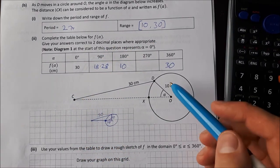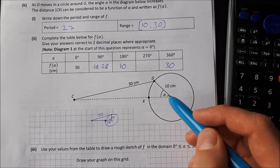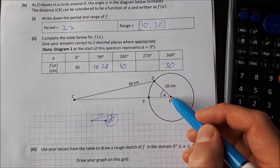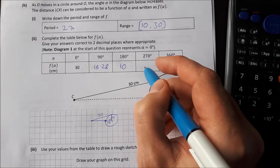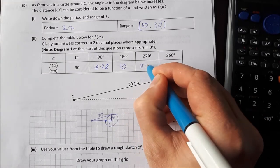For 270 it's actually going to be the same thing as well because this will just be down here, so it'll just be that triangle there flipped upside down. So that's 18.28.